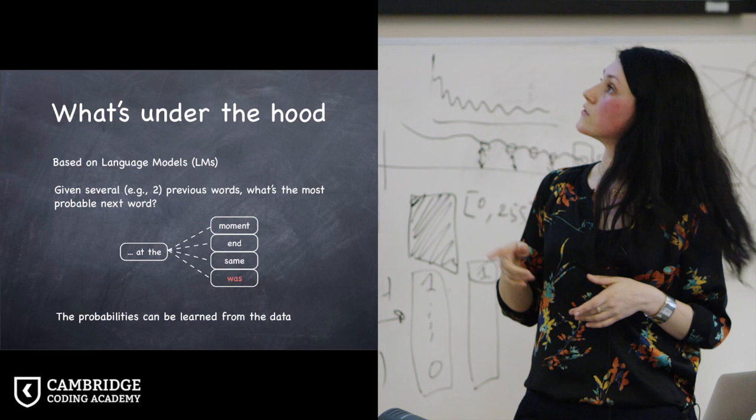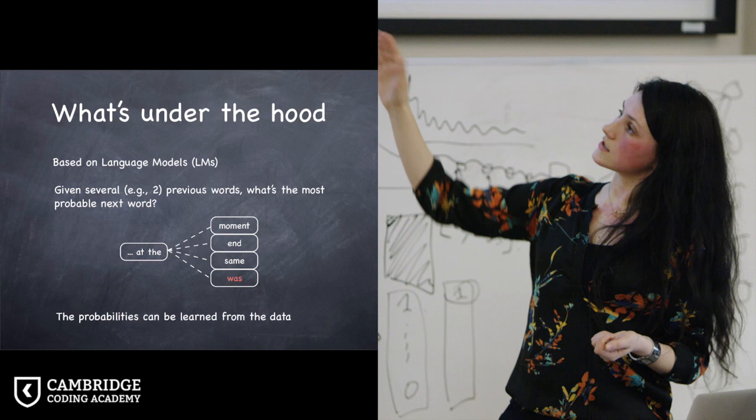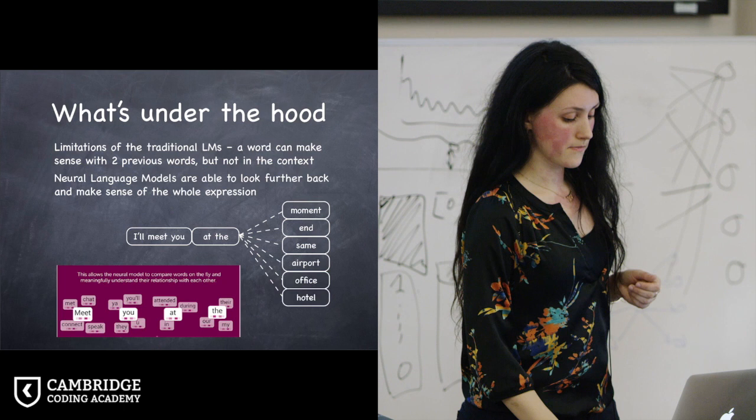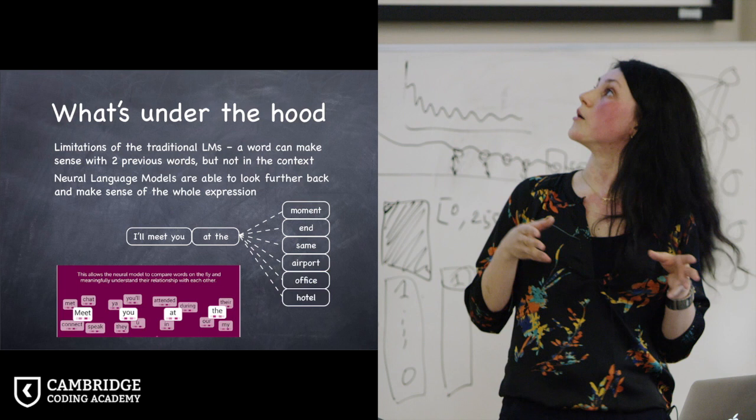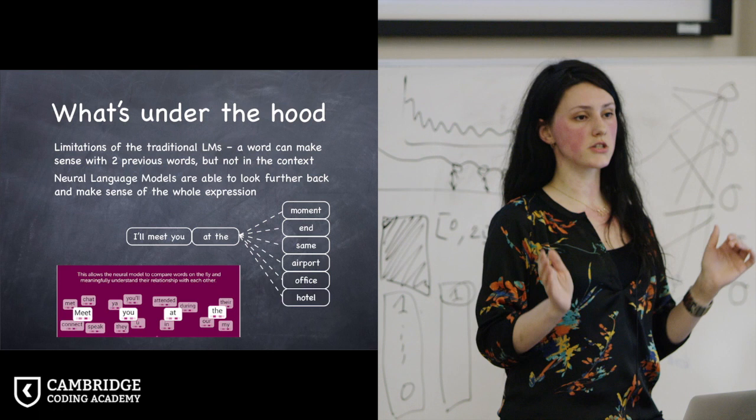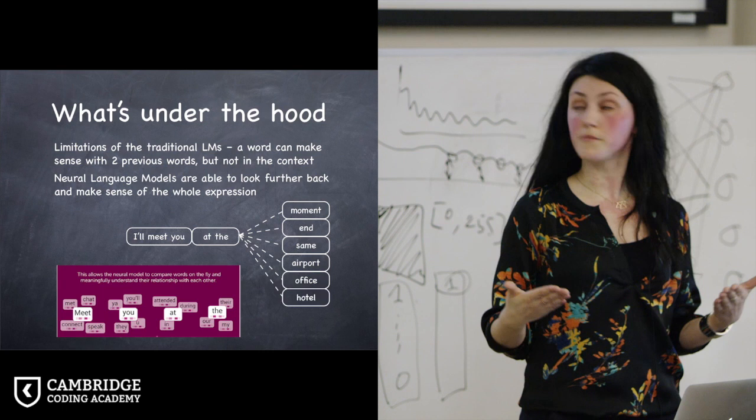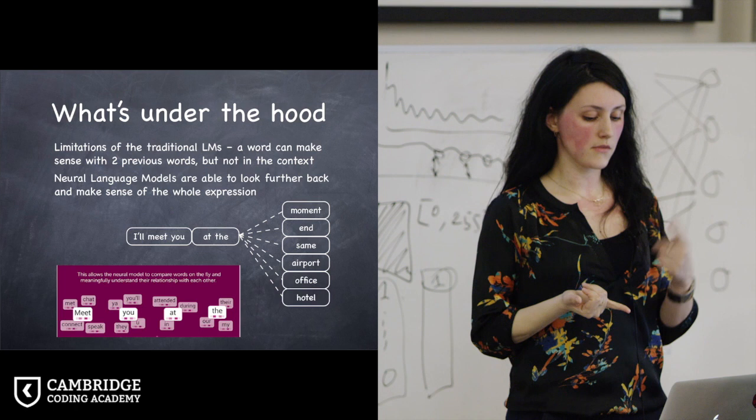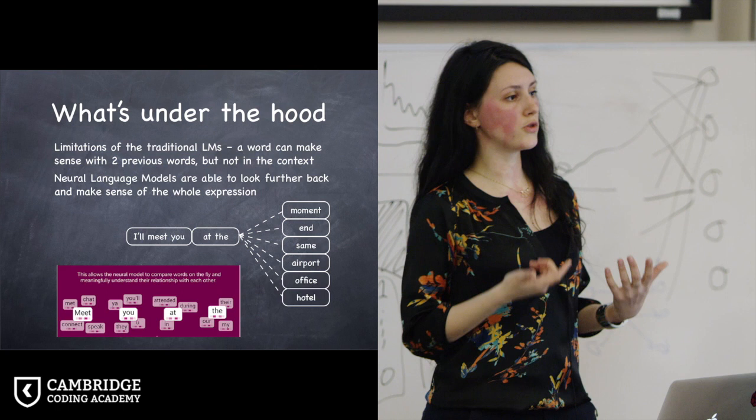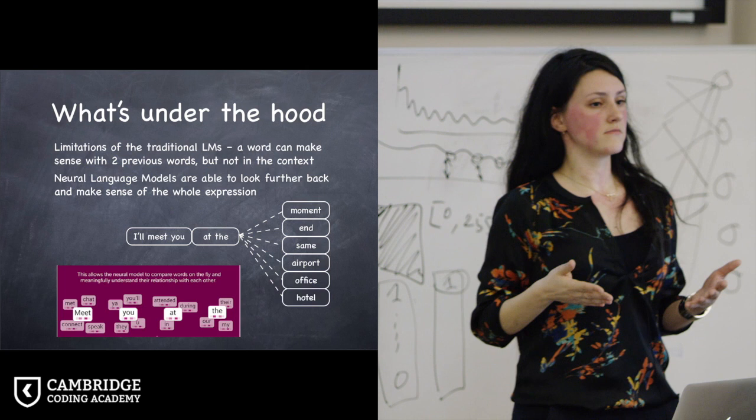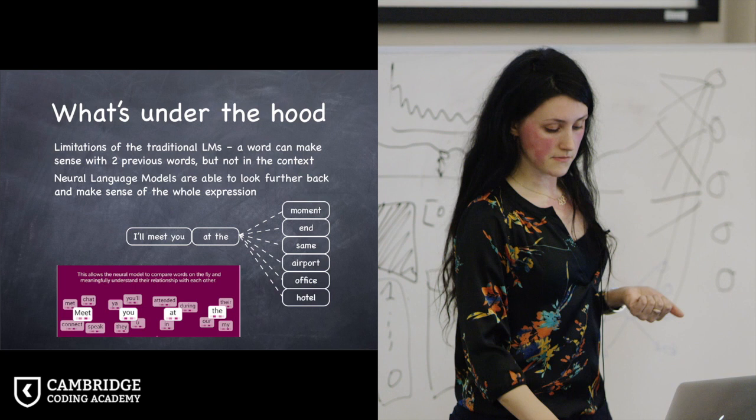The more traditional system, you can see that example on the left, predicted the three words end, moments and same. These types of systems are based on something called language models. Given the previous words in the sequence, they're usually just looking at the two previous ones. It tries to predict what is the most probable next one based on the probabilities that have been calculated on the data the system has seen before. If you think just about these two words at the, you can say that all the three words, end, moments and same, are quite probable. Whereas, probably, you would not follow with this phrase using the word was. It's quite improbable. So it already distinguishes between these different options.